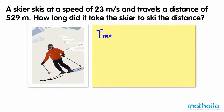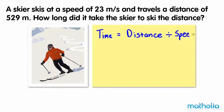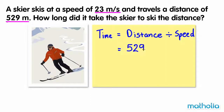Time is equal to distance divided by speed. The distance is 529 metres and the speed is 23 metres per second. Both expressions use the same length units, so we can divide.